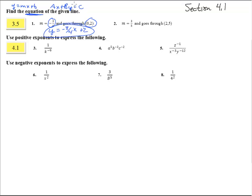Number 2, we're going to do this in standard form. Remember the slope is the opposite of a over b, so if this is a positive slope, that means one of these was negative. I'm going to write that down as 3x minus 5y. The opposite sign of that slope. And it goes through point (2, 5), so the constant is 3 times 2 minus 5 times 5 — that's 6 minus 25, which is negative 19.